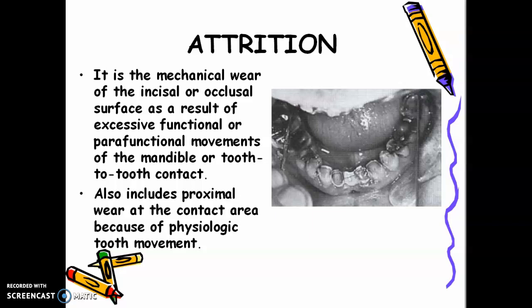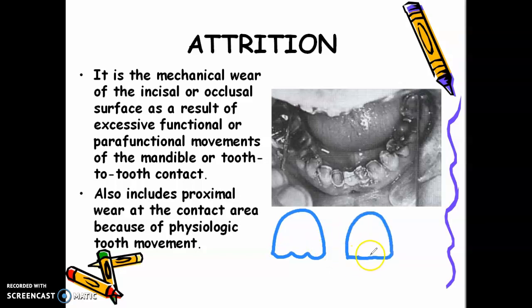Next is attrition — the mechanical wearing away of the incisal or occlusal surface as a result of excessive functional or parafunctional movements of the mandible or tooth-to-tooth contact. Usually, incorrect occlusion can lead to attrition. Attrition doesn't only happen on the incisal or occlusal surface; there is also proximal attrition. When we were younger and teeth were newly erupted, they had mamelons. Now they are worn smooth — that is physiologic wearing away of tooth structure.